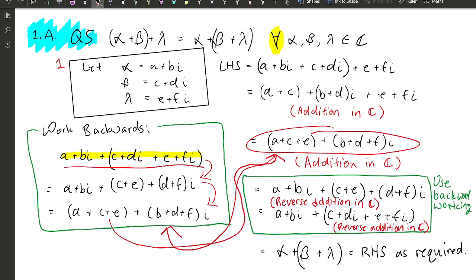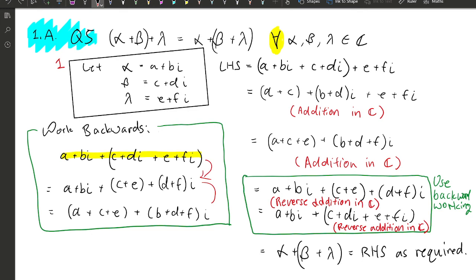Now that's a lot of scribbles - I hope you get the gist of it. So reverse it twice using our backwards working and we get our right hand side as required. Just lost it a bit there, now it's back. That's question five, I'll see you in the next one.